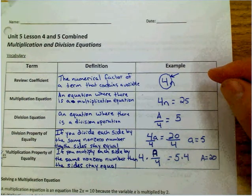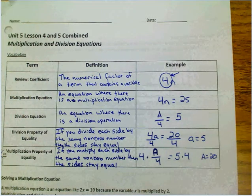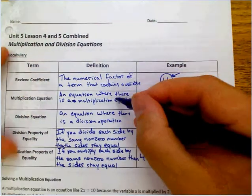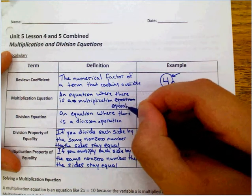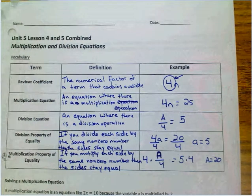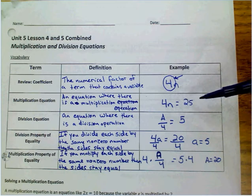Okay, a multiplication equation is an equation where there is a multiplication operation. Sir Jonathan makes mistakes sometimes, too. So, for instance, 4n equals 25.